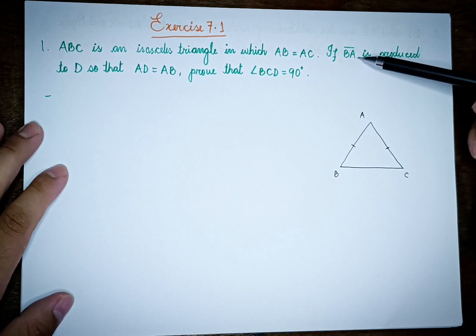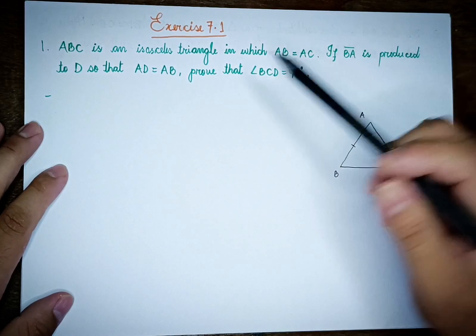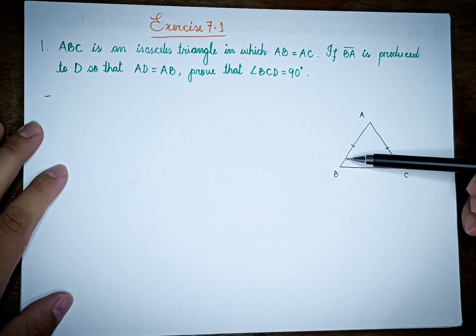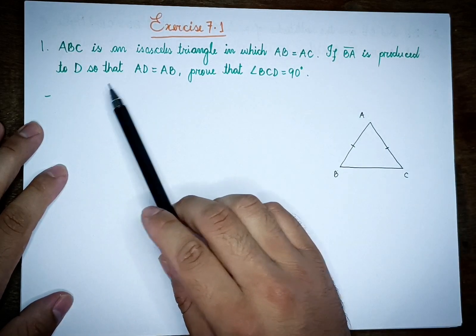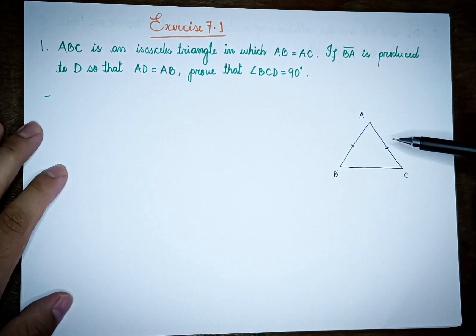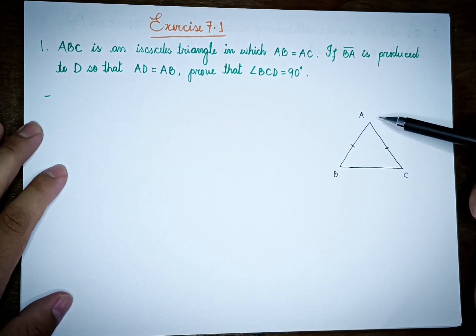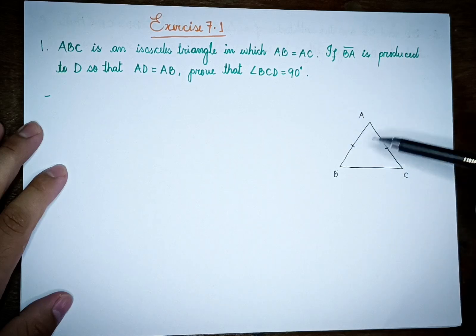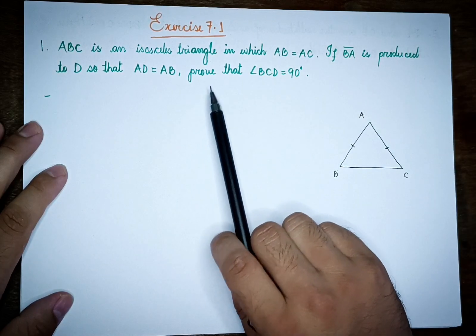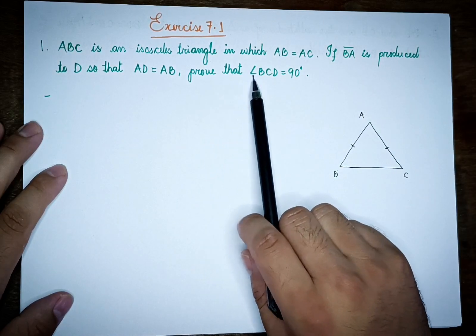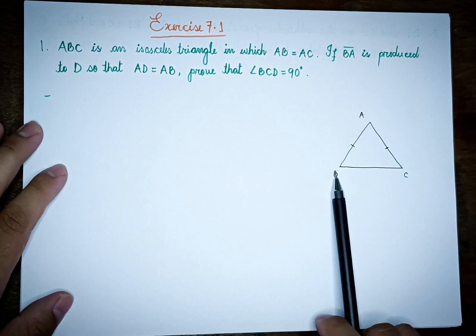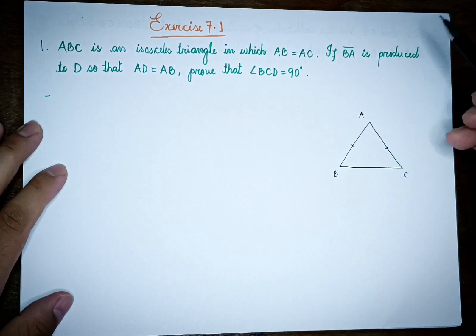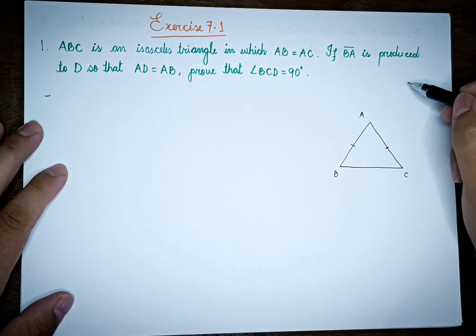If BA is produced to D, so that AD is equal to AB, prove that angle BCD is 90 degrees.